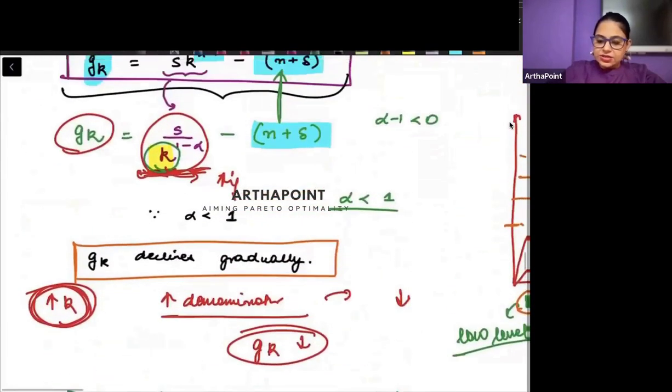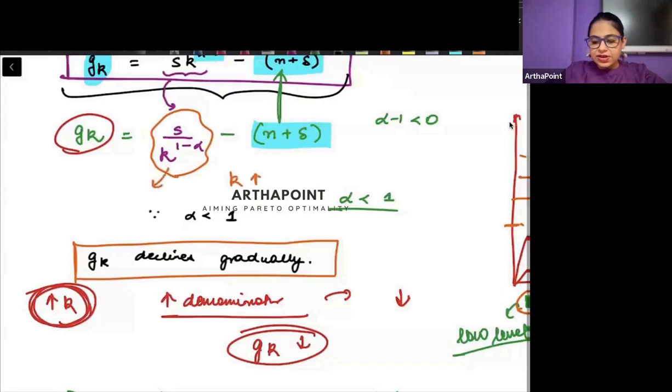I have taken this curve because this is an inverse relation. It's inversely related to capital. Capital is in the denominator, so as capital increases this will decrease.